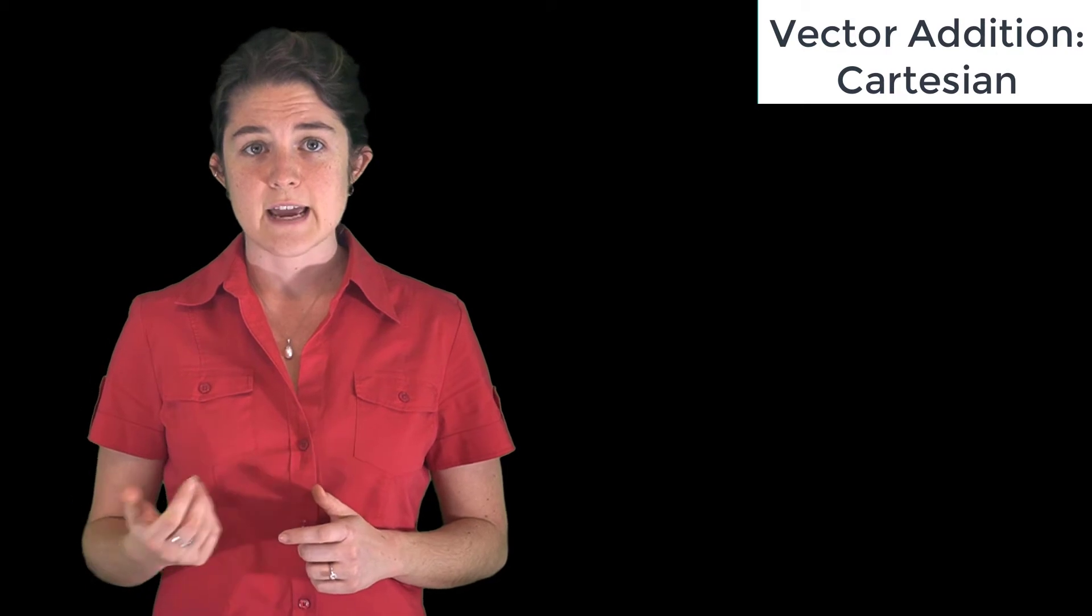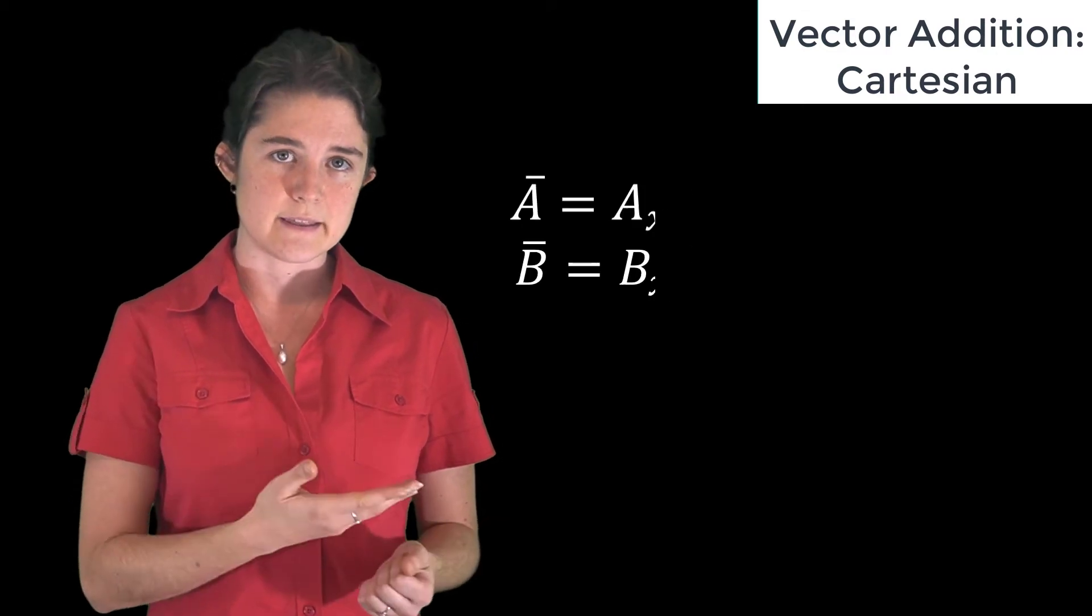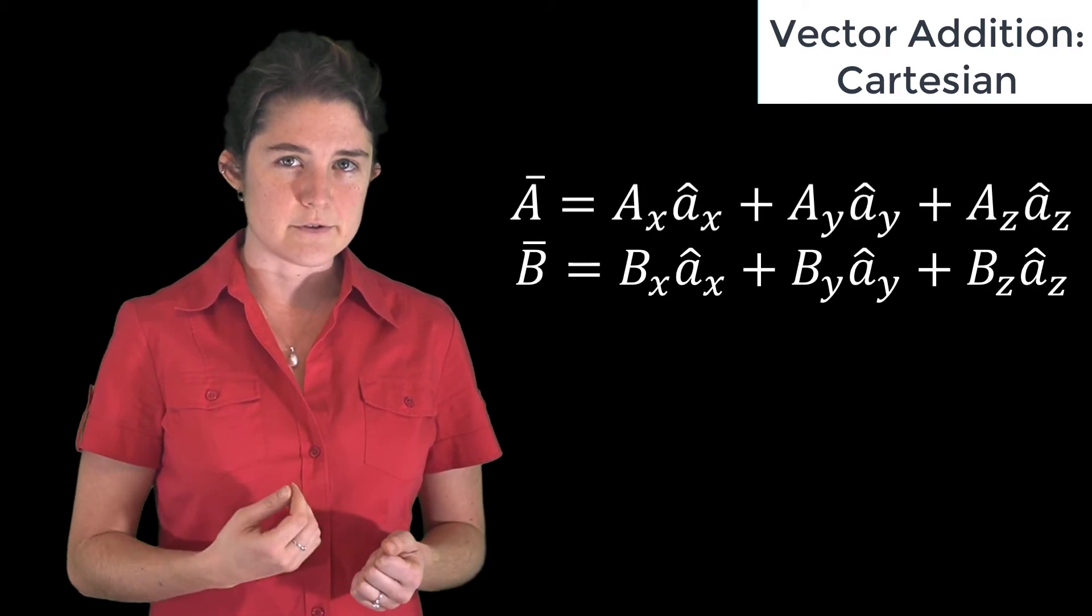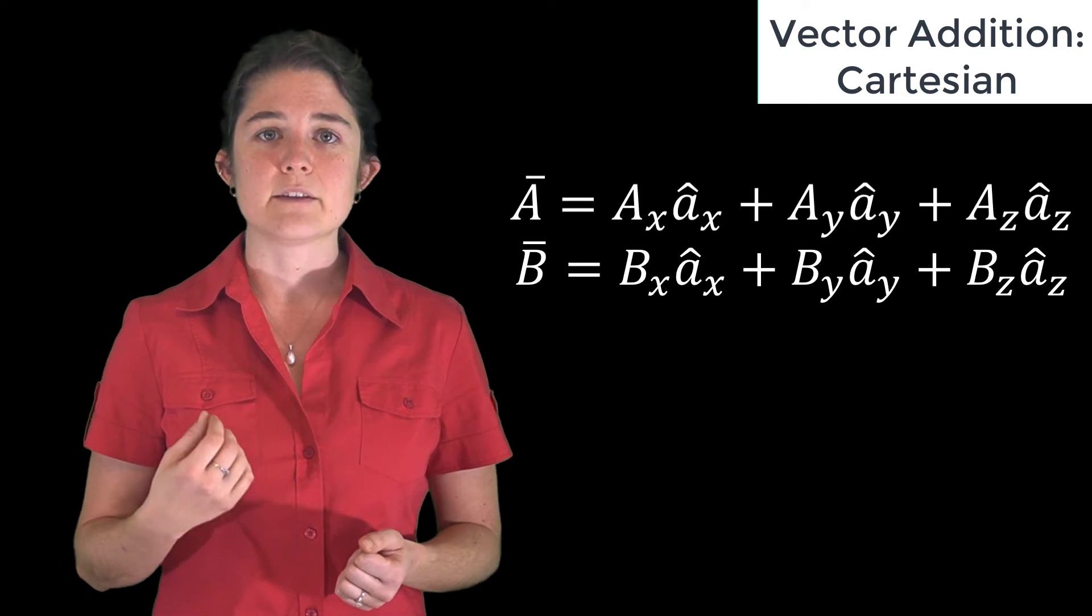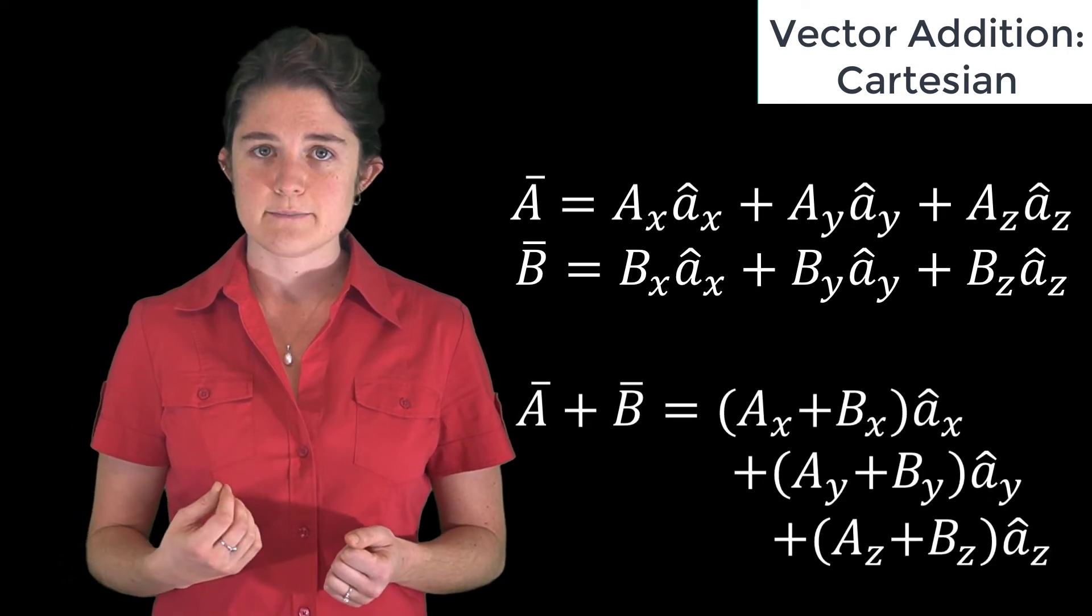If you are given two vectors A and B defined in Cartesian space like this, the sum of those two vectors may be found by adding the coefficients of each unit vector, like this.